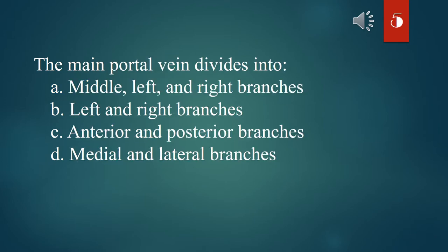The main portal vein divides into: A. Middle, left, and right branches. B. Left and right branches. C. Anterior and posterior branches. D. Medial and lateral branches. The answer is B. Left and right branches.